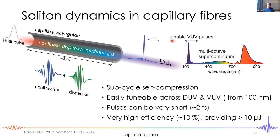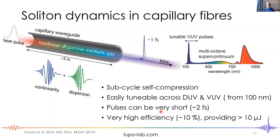What is a soliton? I like this story because solitons were actually discovered in the Union Canal between Edinburgh and Glasgow, which is about 500 meters from my laboratory at Heriot-Watt University. This canal is where the first soliton was observed. John Scott Russell was doing experiments on how to make canal barges travel more quickly.